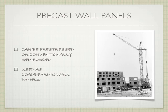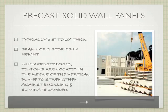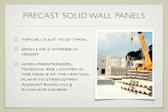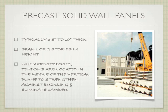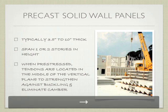Precast wall panels: we started with slabs, moved into beams and girders, and now wall panels. They can be pre-stressed or conventionally reinforced and are used as load-bearing wall sections. Typically they're 3½ to 10 inches thick and span one or two stories in height. If they're pre-stressed, the tendons go right through the middle to avoid an off-center camber or bow — they'll be straightest if the tendons are in the center, which also protects against buckling. You can also have precast stair sections, which can be really useful.